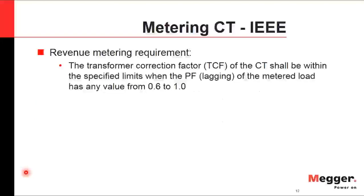For revenue metering equipment, the transformer correction factor (TCF) of the CT shall be within specified limits when the power factor of the meter load has any value between 0.6 and 1.0 lagging. This range accounts for the fact that modern relays and protection operate at unity power factor, while electromechanical relays still in use can have lower power factors.